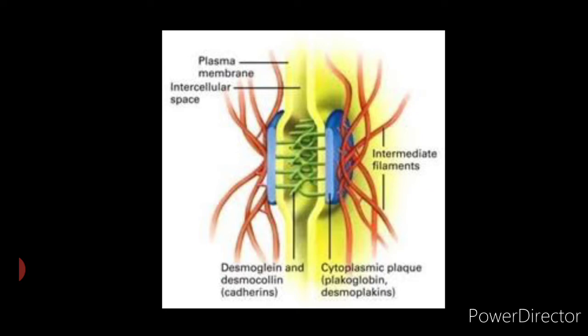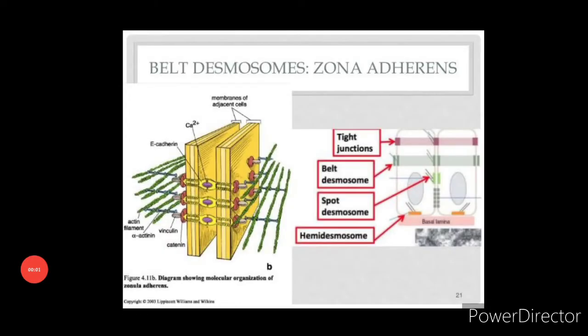Now let us understand belt desmosomes. Belt desmosomes, also called zona adherens, terminal bars, or intermediary junctions, are generally found at the interface between columnar cells.